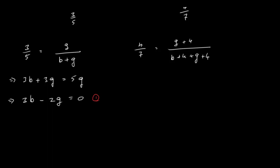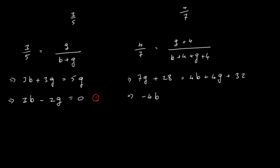For the second equation, cross-multiplying gives 7G + 28 = 4B + 4G + 32. Rearranging, bringing the G terms together and the B term across: −4B + 3G = 4. This is equation two.